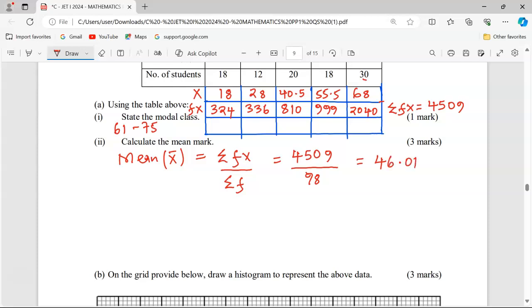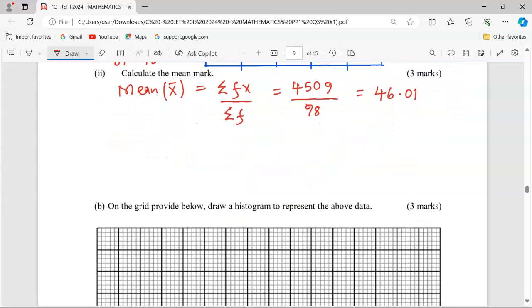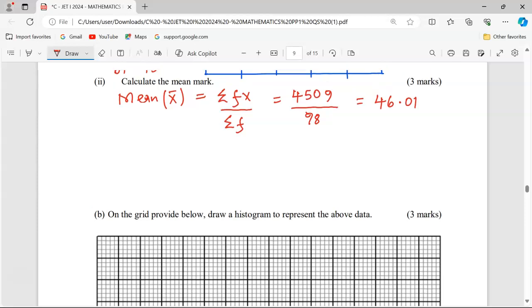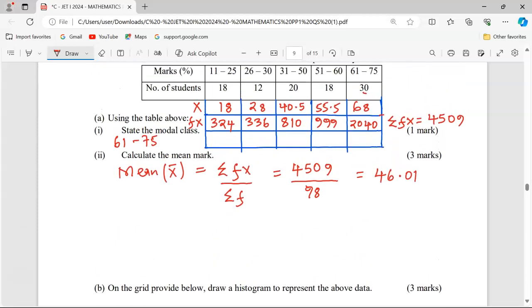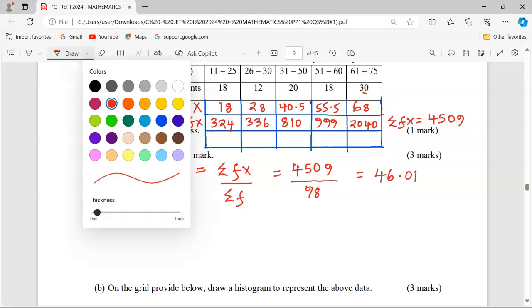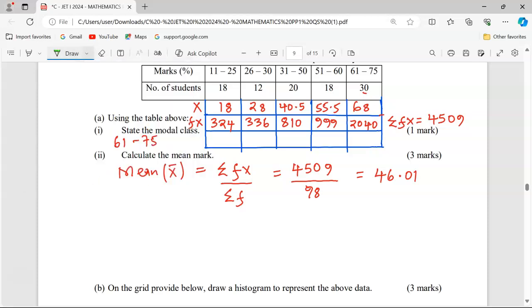Part B: On the grid provided below, draw a histogram to represent the data above. Something we should understand is that the data has different class widths. With different class widths, we don't plot frequency against the boundaries.